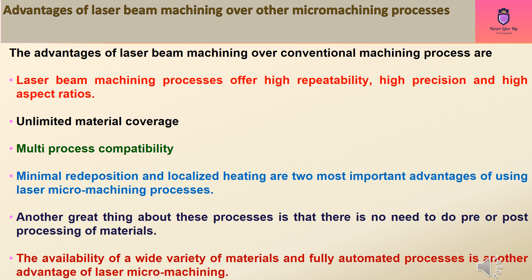The advantages of laser beam machining over conventional machining processes are: laser beam machining processes offer high repeatability, high precision and high aspect ratios. Unlimited material coverage. Multi-process compatibility. Minimal redeposition and localized heating are two most important advantages of using laser micromachining processes. There is no need to do pre or post processing of materials. The availability of a wide variety of materials and fully automated processes is another advantage of laser micromachining.